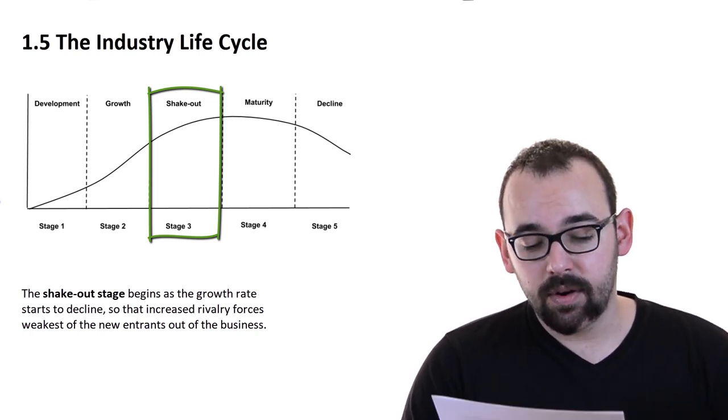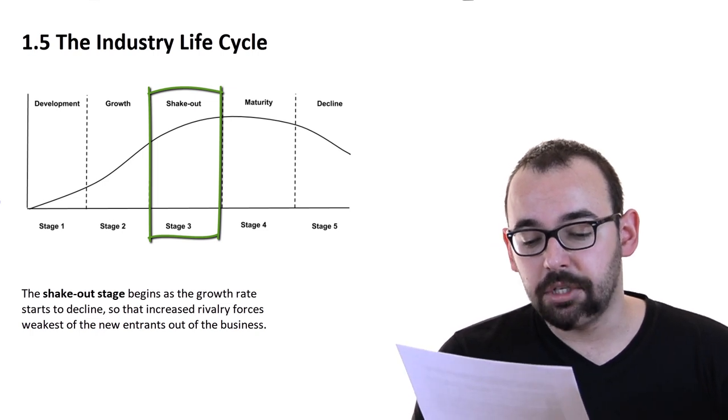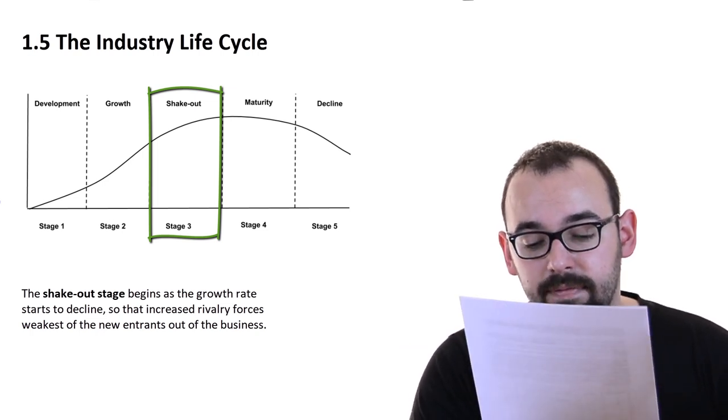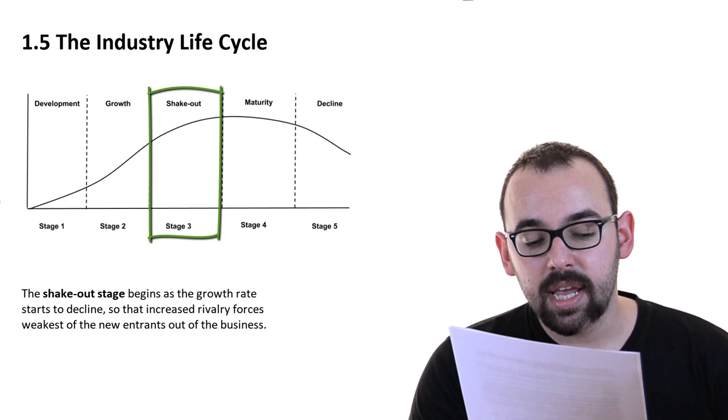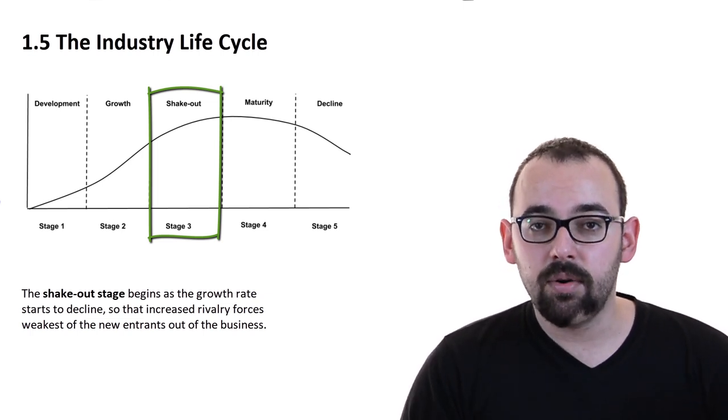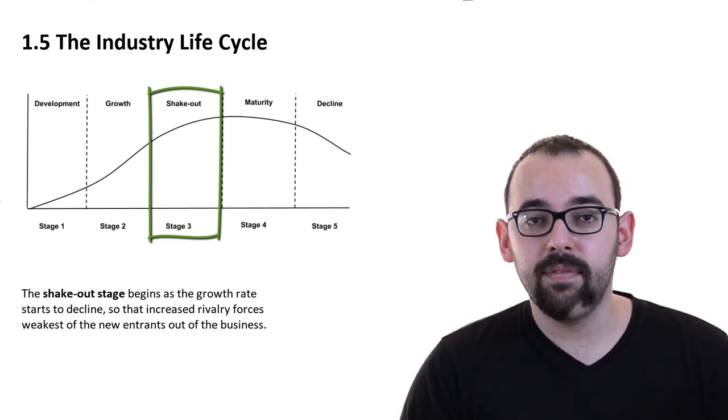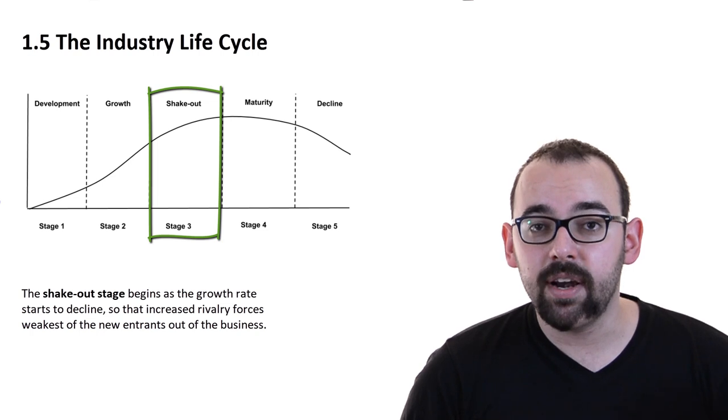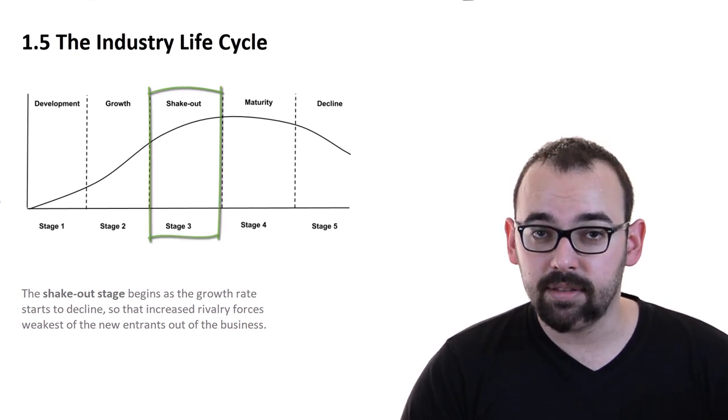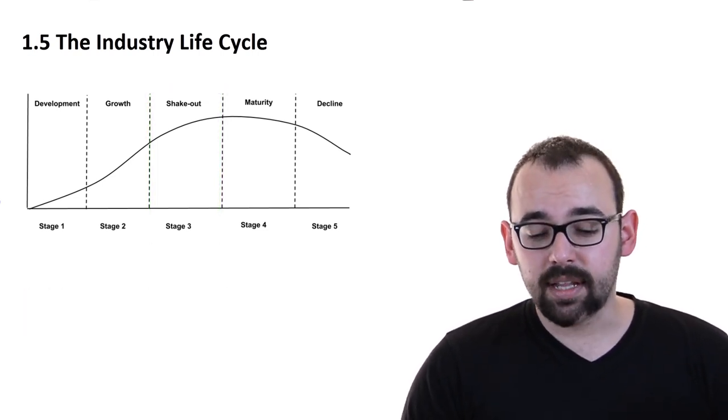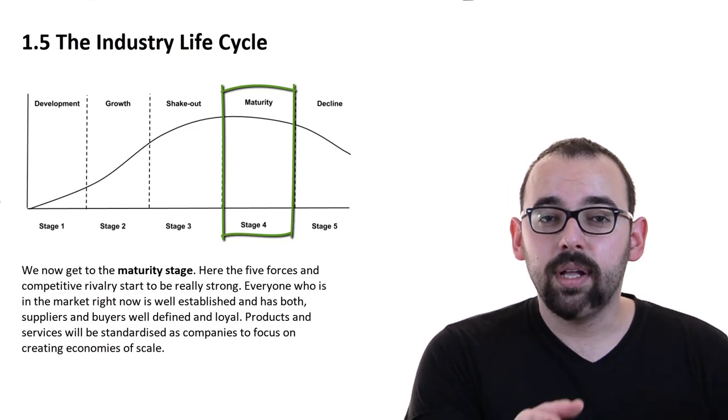Now we move right away to the maturity stage. This is where the five forces and competitive rivalry starts to be really strong. So this is where our previous model, Porter's five forces framework, starts to be really interesting. What's the reason? How should we imagine this maturity stage?